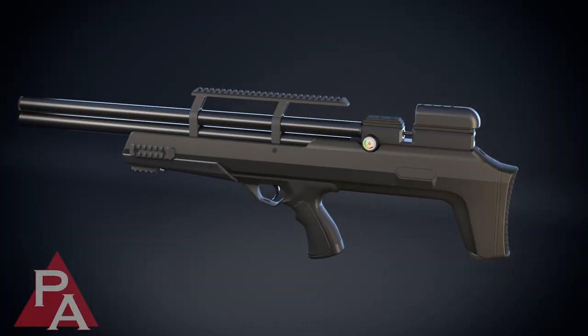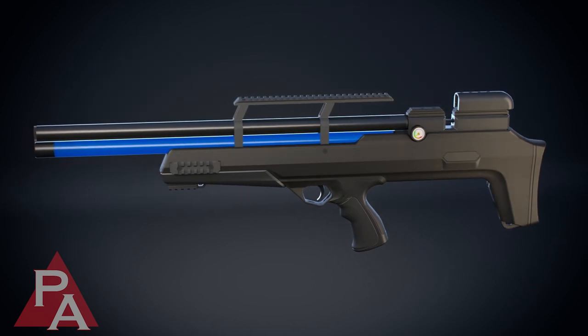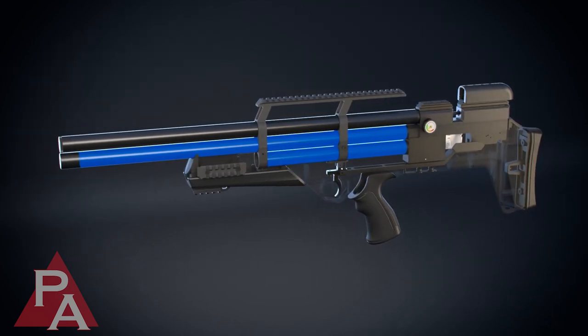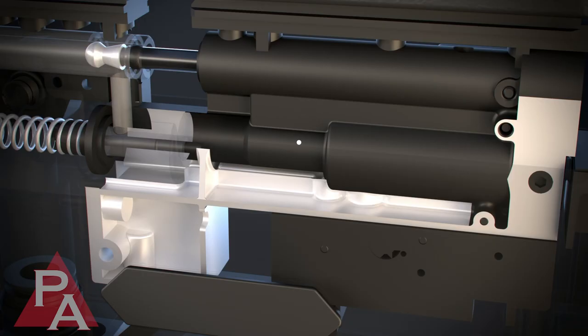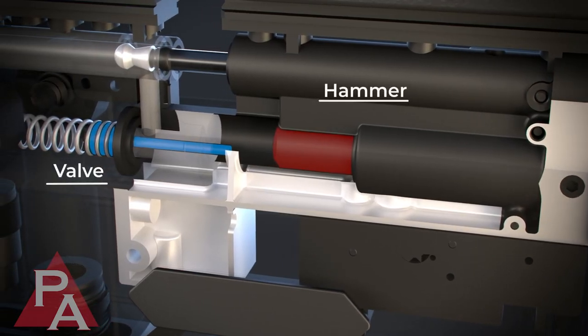Pre-charged pneumatic PCP air rifles are powered by compressed air contained in either an integral air cylinder or bottle. The design incorporates a hammer that strikes a valve that releases some air to propel the pellet out of the barrel.